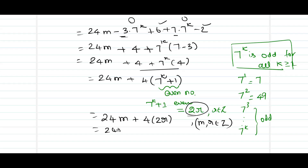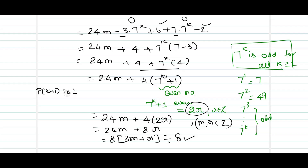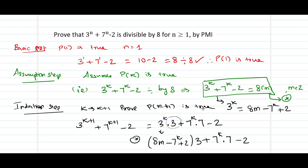So we end up with 24m plus 4 times 2r, which gives 24m plus 8r. Taking 8 common from both quantities leaves us with 3m plus r. Since this is a multiple of 8, it is obviously divisible by 8. Hence we have proved that p of k plus 1 is true, and therefore by the principle of mathematical induction, 3 power n plus 7 power n minus 2 is true for all n greater than or equal to 1.